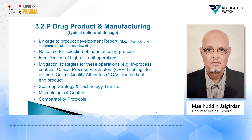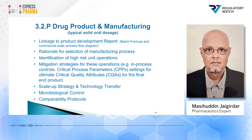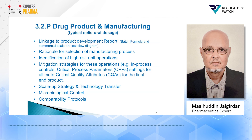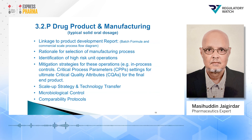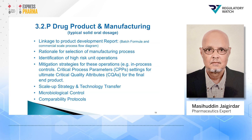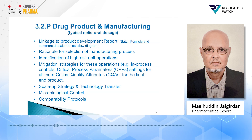The firm should also identify high-risk unit operations. There are many operations in the production of a drug product, so they have to identify which operation is most high risk, and provide mitigating strategies — for example, in-process control critical process parameters (CPPs), settings for critical quality attributes (CQAs) of the final end product, scale-up strategy and technology transfer, microbiological control, and comparability protocol.